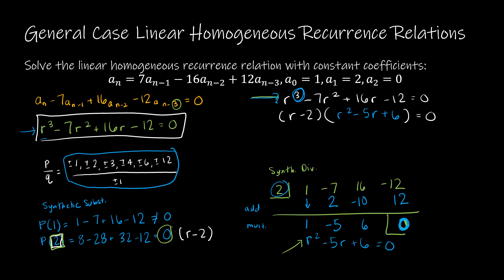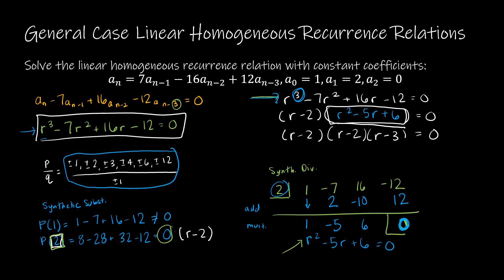Rather than continuing with P/Q synthetic substitution, I'll factor r² − 5r + 6 directly. Factors of 6 that add to −5 are −2 and −3, so this factors as (r − 2)(r − 3). So overall I have (r − 2)(r − 2)(r − 3) = 0, giving roots r = 2 (a repeated root) and r = 3.